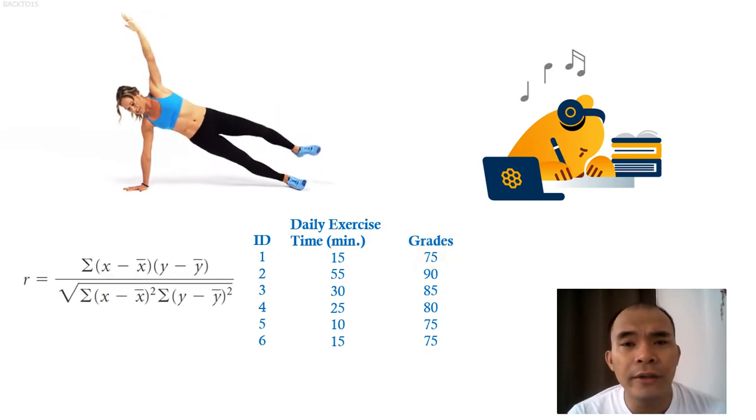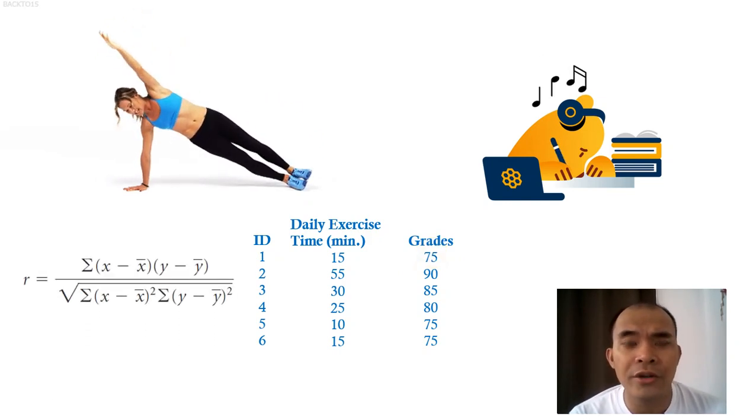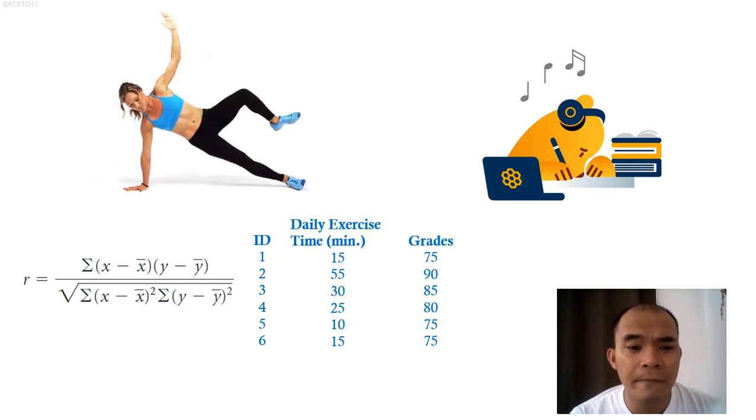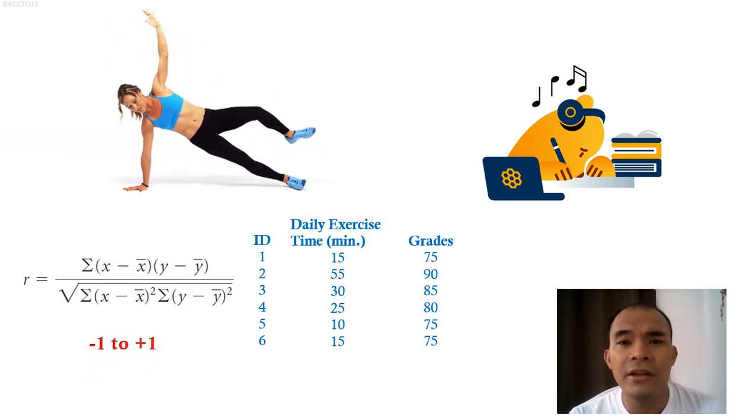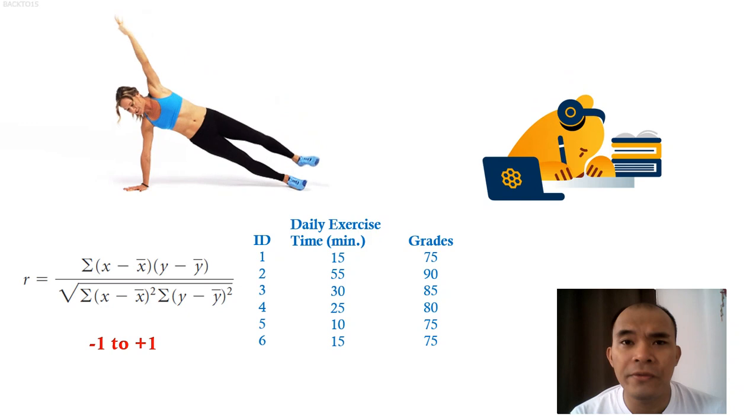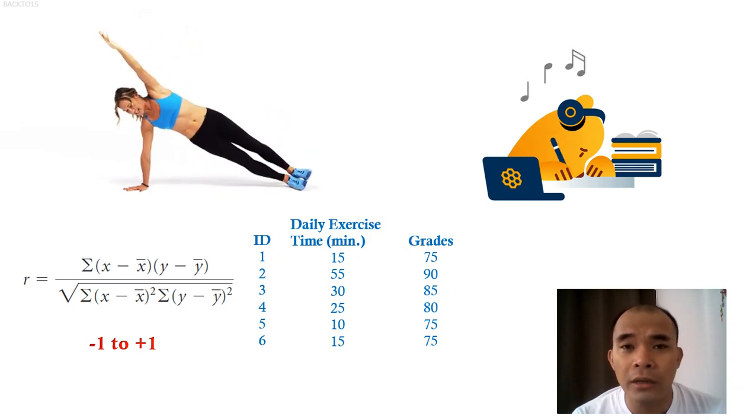Okay, so in order for us to compute the correlation coefficient, from our previous discussions on the prelim, we have this formula here. And then the value of this correlation coefficient ranges from negative one to positive one.